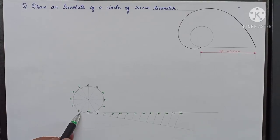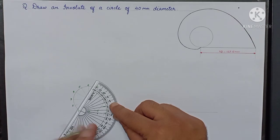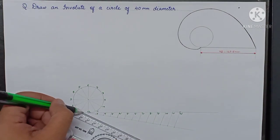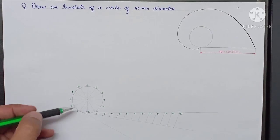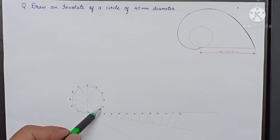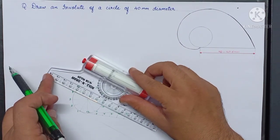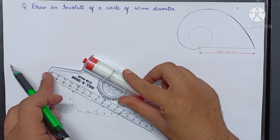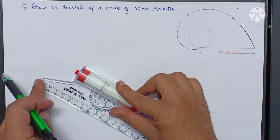Now draw tangents from all the points on the circumference, starting from point number one. We can use another method: line number one is perpendicular to the line connecting points 4 and 10. Match the roller scale to the line connecting 4 and 10 and slide it until it reaches point number one to get the tangent.